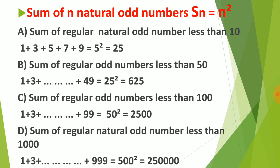If we add odd numbers less than 100, we get 2500; and less than 1000, we get 250,000. Note that the answer remains the same whether we say 'less than 10' or 'up to 10' for odd numbers, because in both cases there are five odd numbers.